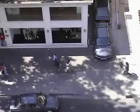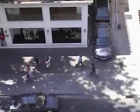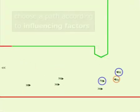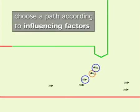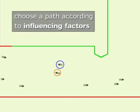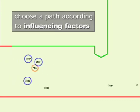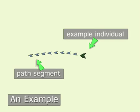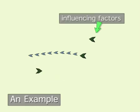We now describe the example creation process. We track each individual in the video. We assume that an individual chooses a certain path based on the configuration of surrounding people and obstacles, which we term influencing factors. An example is therefore composed of a path segment that an individual has taken, together with the configuration of influencing factors.